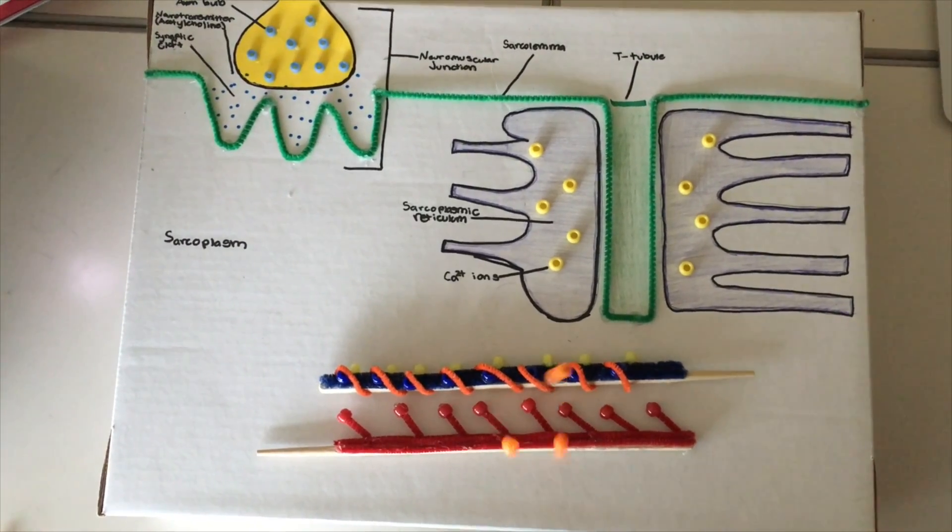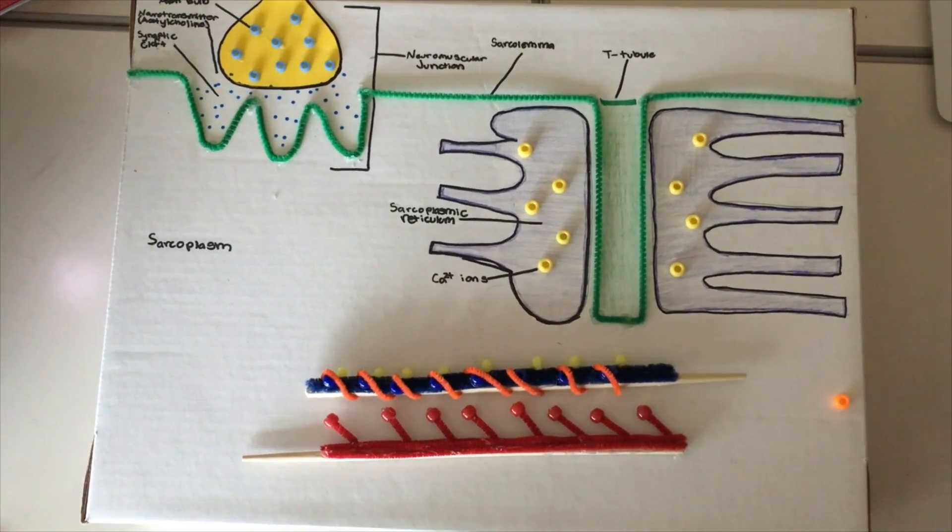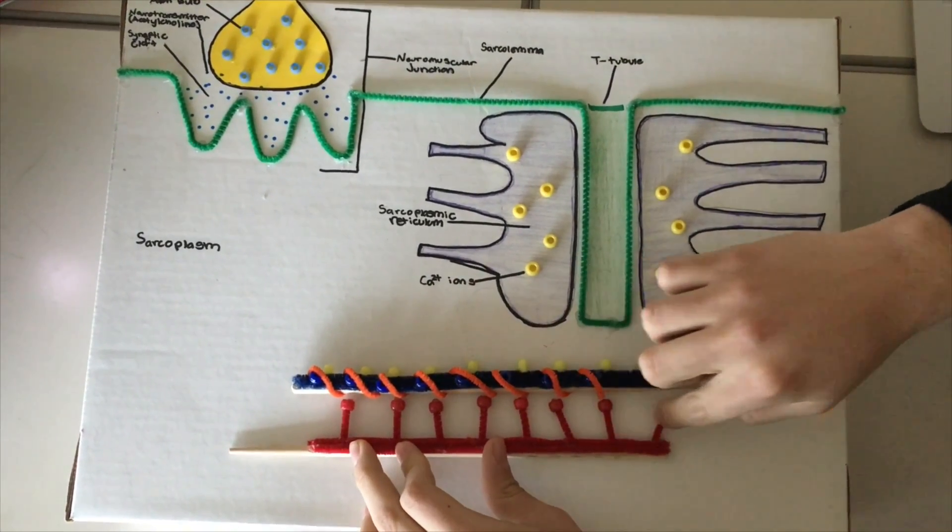ATP binds to myosin and hydrolysis occurs, pulling back the myosin head into an extended high energy position, leaving byproducts of ADP and inorganic phosphate.